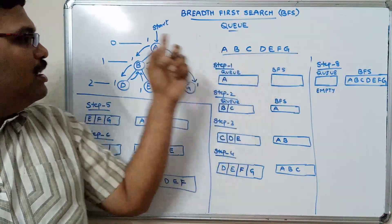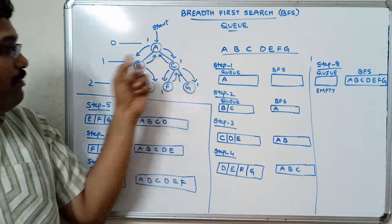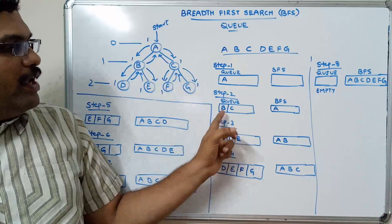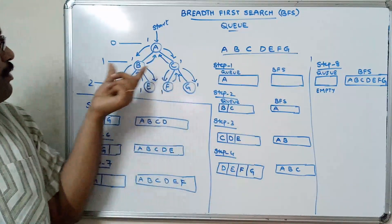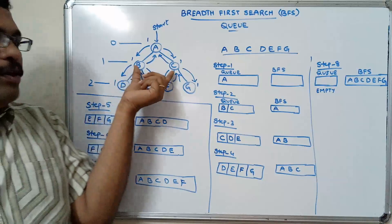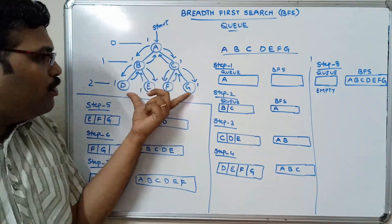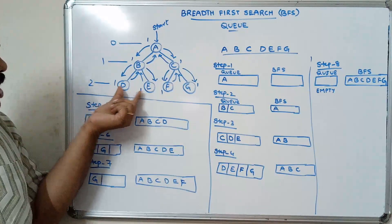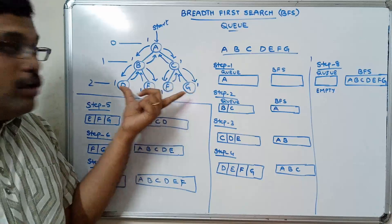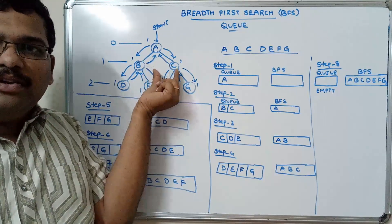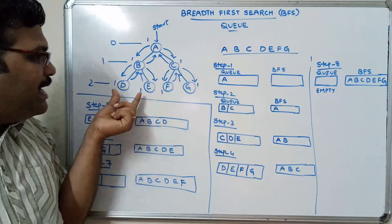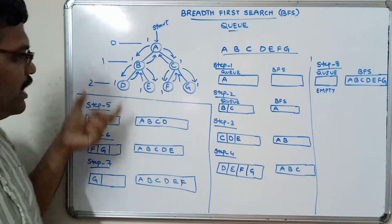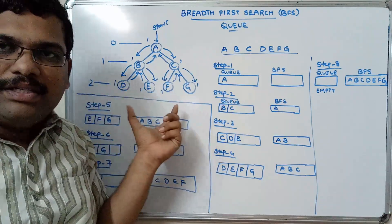In level one there are two nodes adjacent to A — B and C — so we visit B and C. Then we go to level two because only two nodes are in level one. In level two there are four nodes, and we visit all four before entering the next level. D, E, F, G are all adjacent to B and C, the level one nodes.